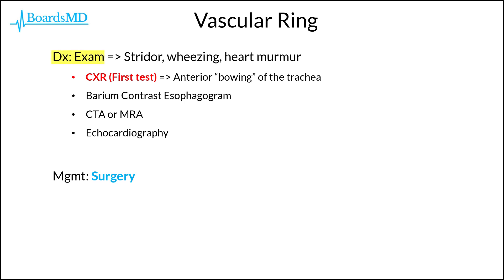On physical exam, the patient may have stridor as well as wheezing, and not surprisingly, they may also have a heart murmur as a result of these anomalies, often involving the aorta.